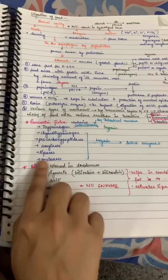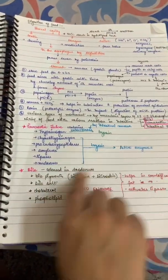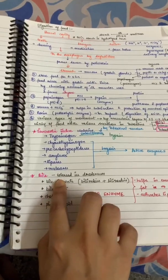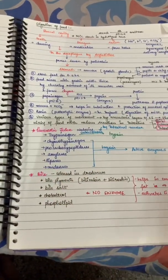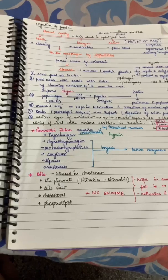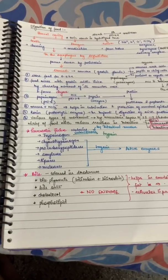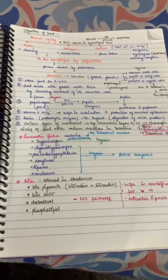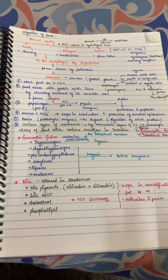Bile and the pancreatic juice come through a common hepato-pancreatic duct. You have to study the anatomy details from NCRT — once you look at the figure, you will understand it quickly. Bile activates lipase.